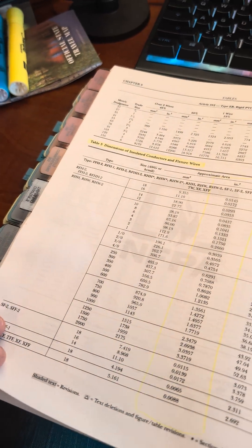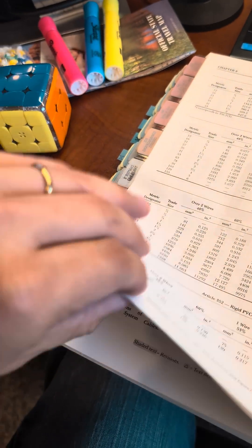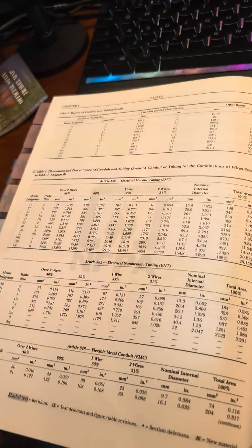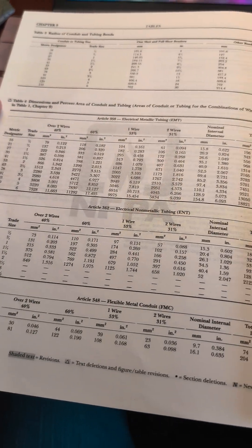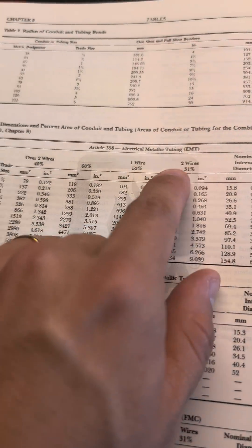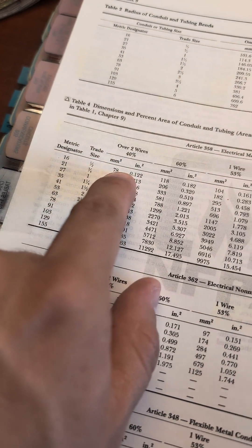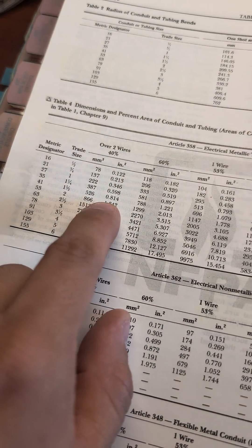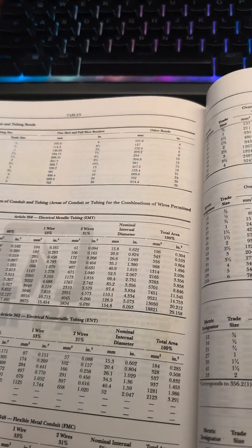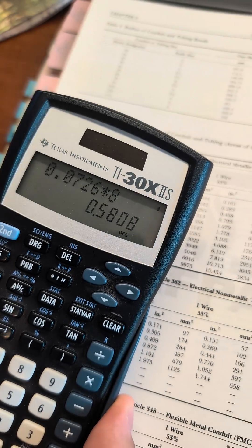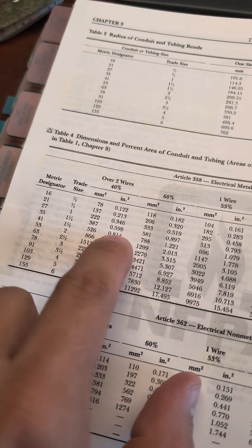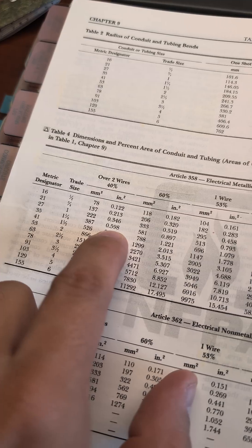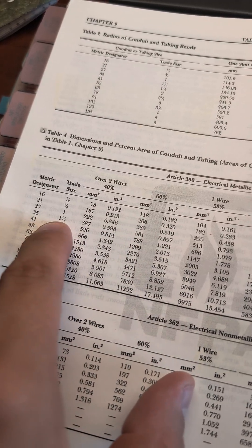Now we can go from Table 5 to Table 4 — the Dimensions and Percent Fill. We're going to be looking for EMT, and since we're over 2 wires, it's 40%. Looking at our calculator, we need 0.58. We have 0.598 available, so the answer is inch and a quarter.